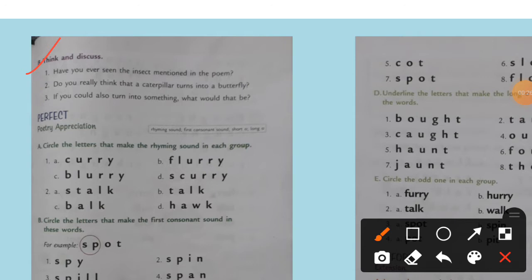Think and discuss. Number one, have you just discussed children? Have you ever seen the insect mentioned in the poem? Caterpillar, you see. So you write, you say, yes, I have seen the insect mentioned in the poem.